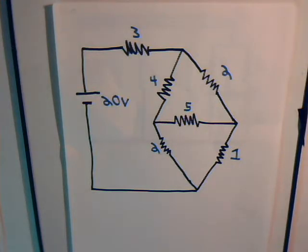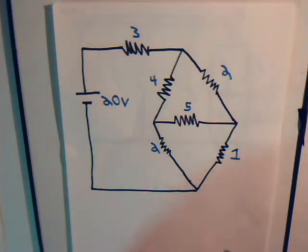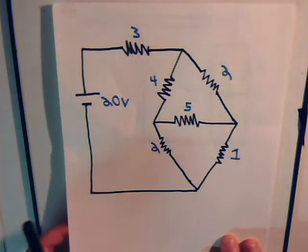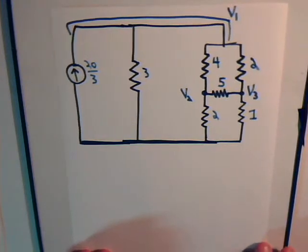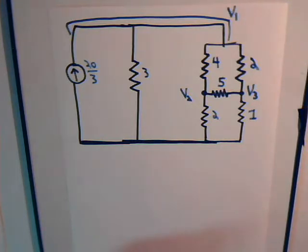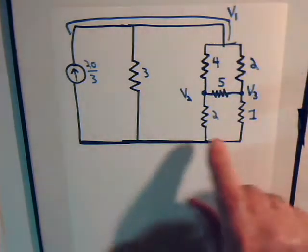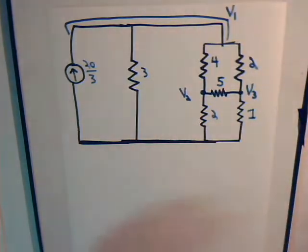In the last video, we were re-analyzing the circuit by doing a source conversion and re-drawing the circuit. We were trying to determine the current through all the resistors using the nodal technique analysis, and we had gotten as far as determining the three different current equations at each of the nodes: V1, V2, and V3.